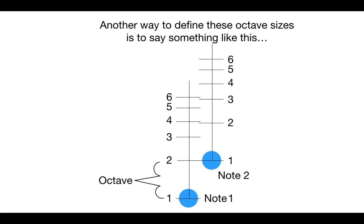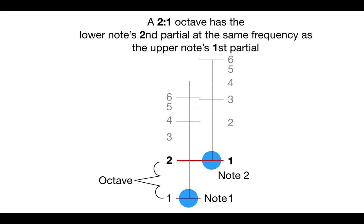Another way to define these octave sizes is to say something like this. A 2-1 octave has the lower note's second partial at the same frequency as the upper note's first partial.